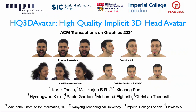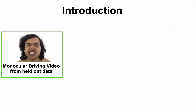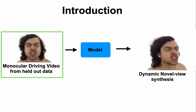We present HQ3D Avatar, a new approach to render human heads at high quality using multi-resolution hash encoding. Our approach is trained using multi-view data, and the end goal of our model is to create a high-quality personalized 3D head model. During inference, our model can be controlled from a monocular input and can be viewed from arbitrary camera viewpoints.